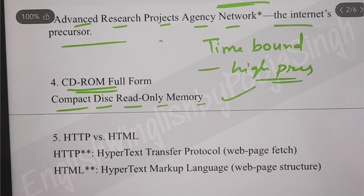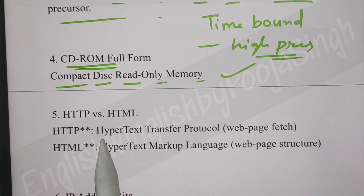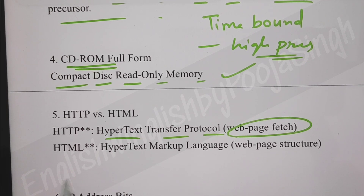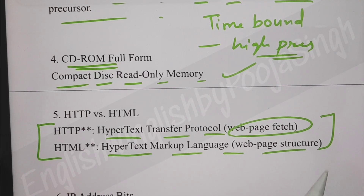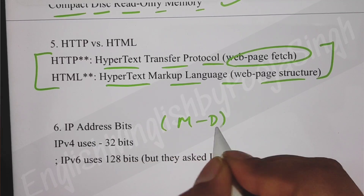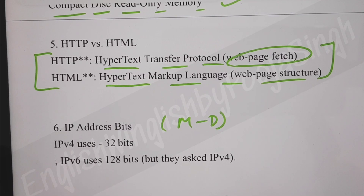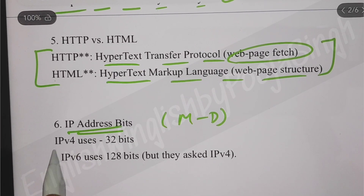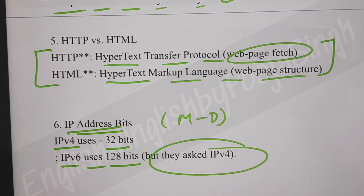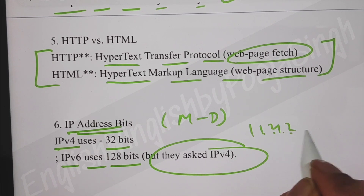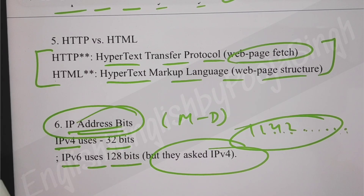They also asked about HTTP versus HTML. HTTP stands for Hypertext Transfer Protocol - used for web pages. HTML stands for Hypertext Markup Language - for web page structure. We have already talked about these. Then they asked about IP address bits: IPv4 uses 32 bits and IPv6 uses 128 bits. From the IP address we get to know the exact location. I'd consider this moderate to difficult.